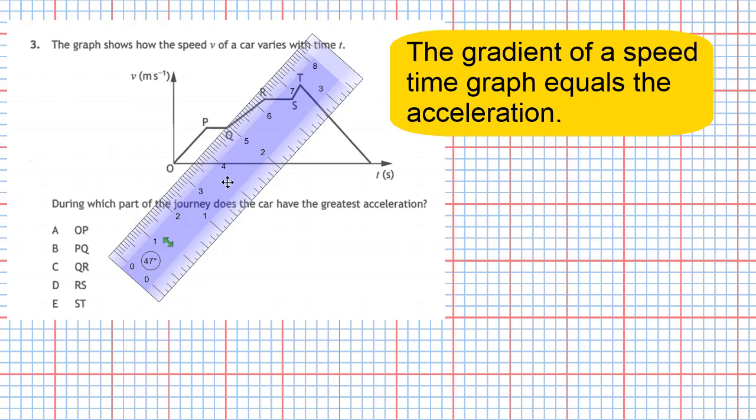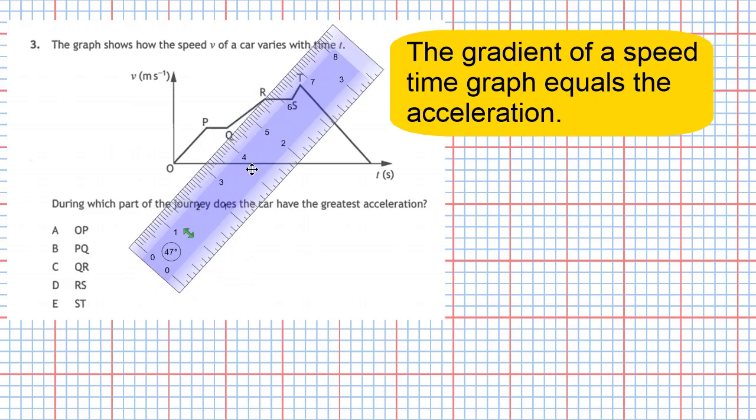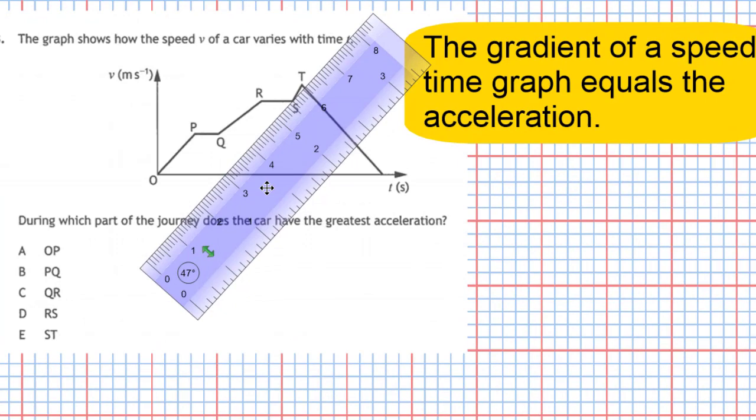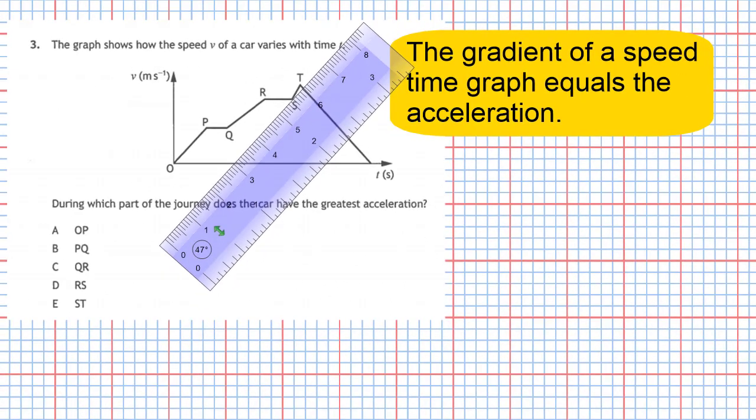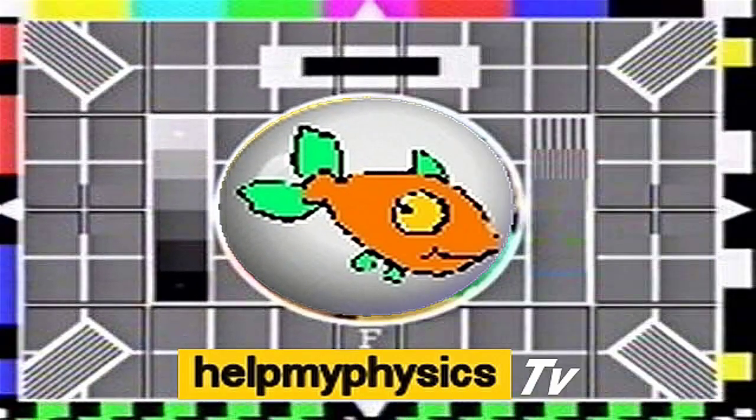But from R to S we have got another flat line, which means no acceleration. And this small part from S to T, you can see that the line has got in fact a bigger gradient than the whole of the graph. So S to T has got the biggest gradient. Therefore it will have the biggest acceleration. So the answer to that question will be 3E. Thank you.